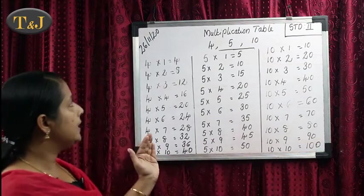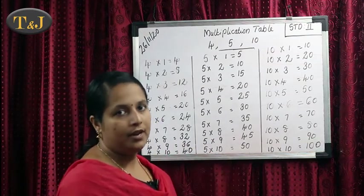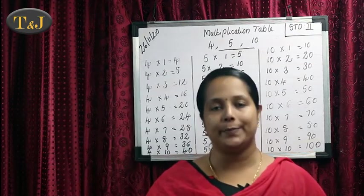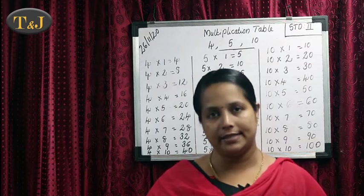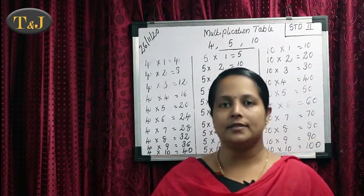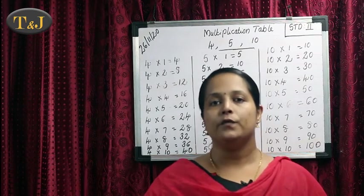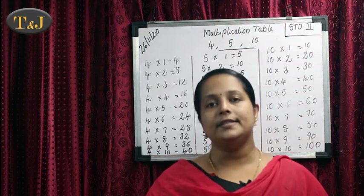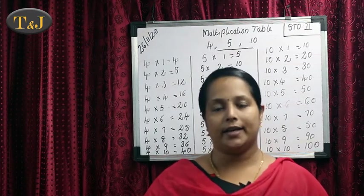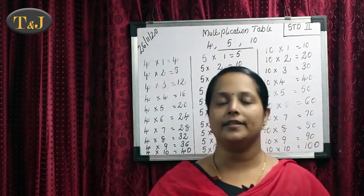So all of you study this multiplication table of 4, 5 and 10 very well. I hope all of you understood how to study the multiplication table of 4, 5 and 10. Children, all of you study the previous classes' tables — 1, 2, 3 — and today's class: 4, 5 and 10. These tables all of you study very well. Okay then children, take care. Bye. Thank you.